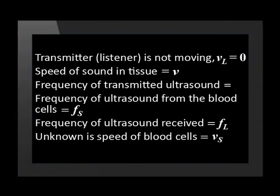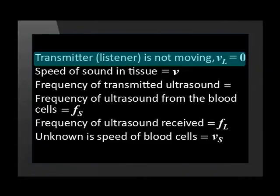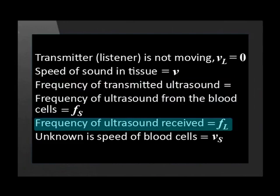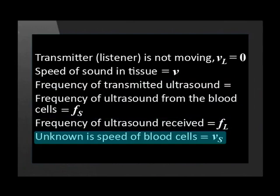The computer — the receiver — registers the reflected sound waves at the lower frequency. Thereafter, the computer calculates the speed of the red blood cells. Let's recap: the transmitter is not moving; the blood cells act as the moving source; we measure the frequency of the ultrasound reflected back to the receiver; and what needs to be calculated is the speed of the blood cells.